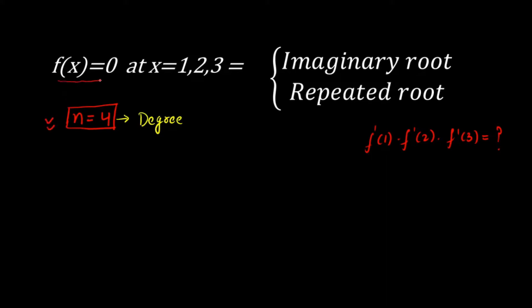Since f(x) = 0 at x = 1, 2, and 3, we have three roots. But if the polynomial is degree 4, there must be a 4th root. This creates an ambiguous case — the 4th root could either be imaginary or a repeated root. We will examine which of these two cases is possible.